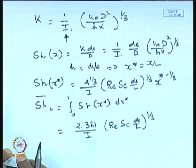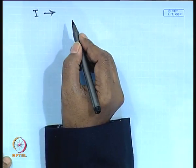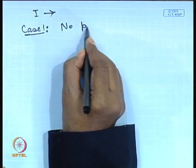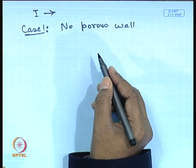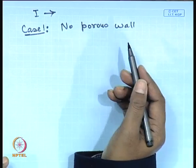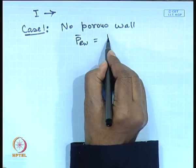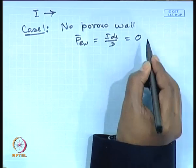This is a very crucial relationship from which we can get various interpretations about the mass transfer coefficient or Sherwood number in a channel where the walls are porous — unlike the case of heat and mass transfer analogy where channel walls are impervious. Depending on the value of I or the physical situation, several simplified cases arise. Case 1 is no porous wall — flow through an impervious conduit — meaning there is no permeate flux, so the Péclet wall number P_w equals zero.